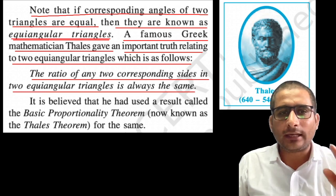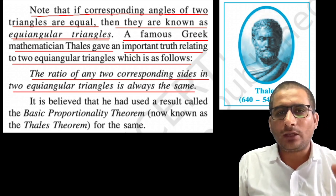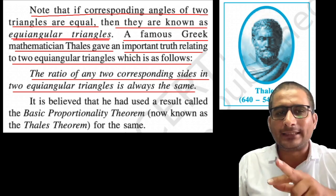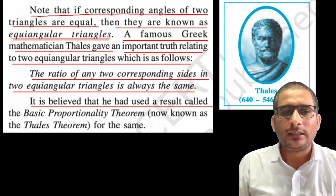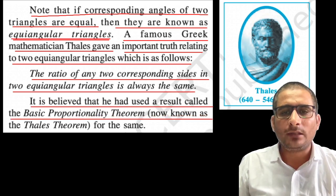If there are two equiangular triangles, then the ratio of the two corresponding sides is always the same. It is believed that he had used a result called the Basic Proportionality Theorem, now known as Thales Theorem, for the same.